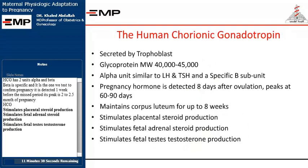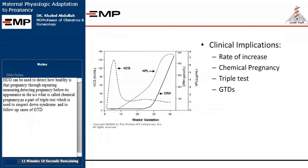HCG has two units, alpha and beta. Beta is specific and is the one we test to confirm pregnancy. It is detected one week before the missed period, and its peak is at 2 to 2.5 months of pregnancy. HCG stimulates placental steroid production, fetal adrenal steroid production, and fetal testes testosterone production. HCG can also be used to detect how healthy a pregnancy is, to detect chemical pregnancy before its appearance on ultrasound, and as part of the triple test used to suspect Down syndrome and to follow up cases of gestational trophoblastic disease.